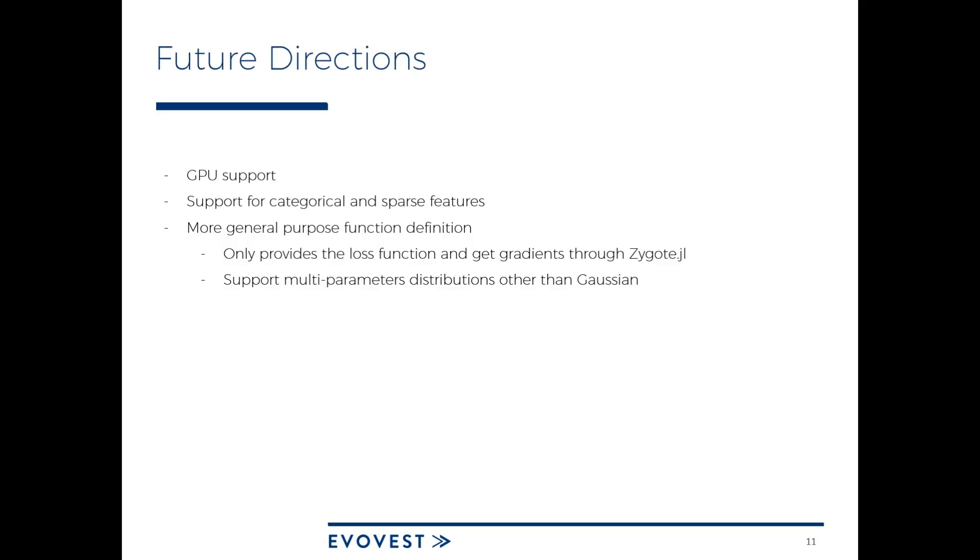Finally, a word on the future directions. There's GPU support I would like to bring. There's already a CUDA kernel for building histogram but there's still several work remaining for the rest of the integration. Also, support for categorical variables. Right now, you would need to one-hot encode them.